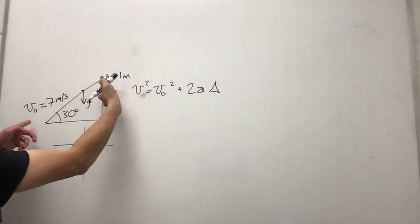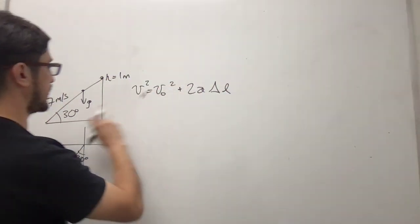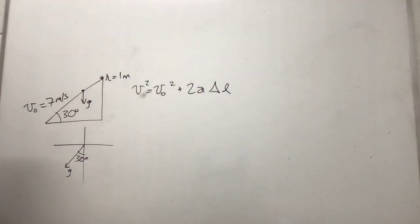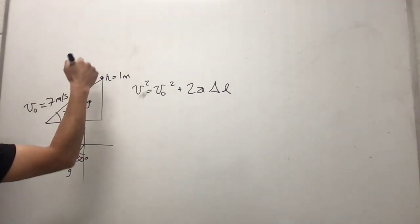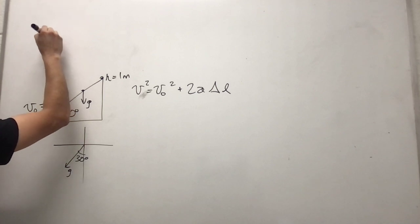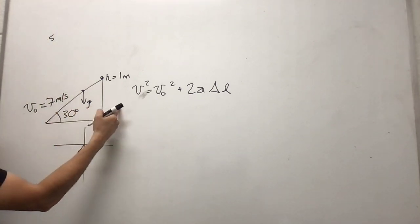Final velocity squared is equal to initial velocity squared plus 2a delta l. I'm going to call it you know l for length of this thing. And what is that length? Well we know that this is one meter and it is opposite to this angle of 30 degrees.